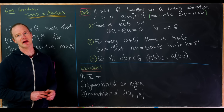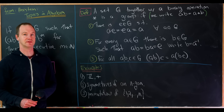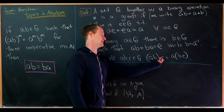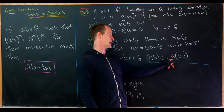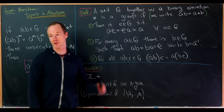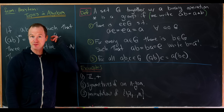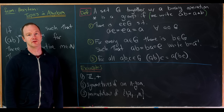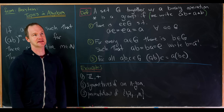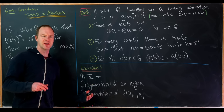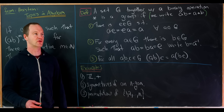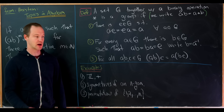We also use the standard notation b equals a-inverse for this setup. Finally, we need the binary operation to be associative: for all a, b, c in G, a times the quantity b times c equals the quantity a times b times c. Notice we do not require the group to commute — a times b is not necessarily b times a. Matrix groups are a great example of groups that do not commute.